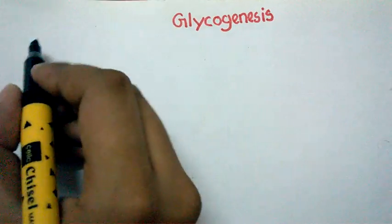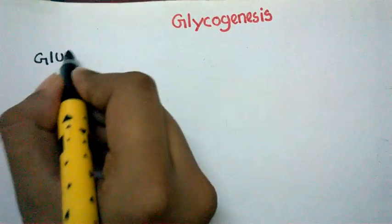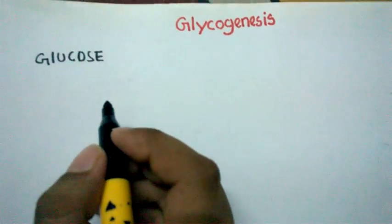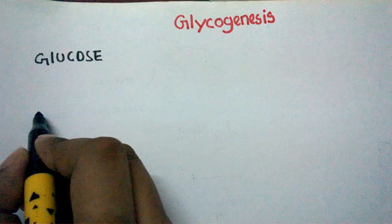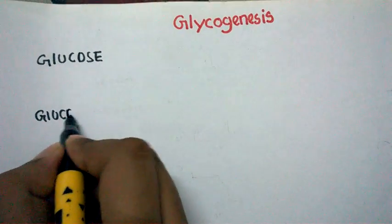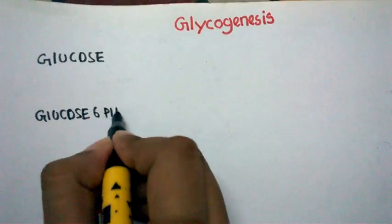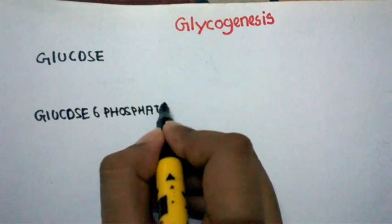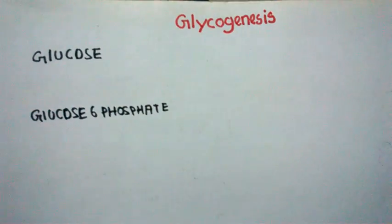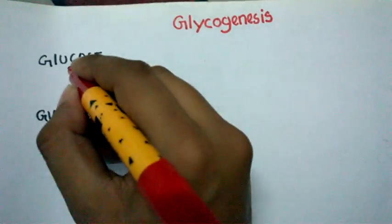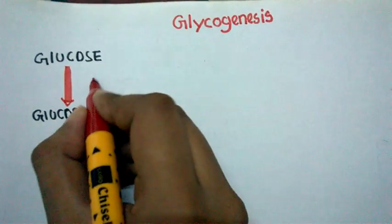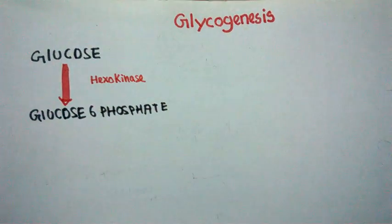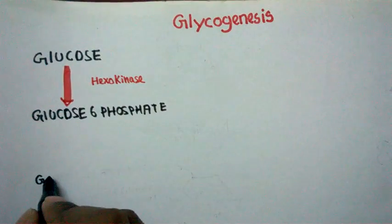So let's see step by step how the glycogenesis process occurs. Glucose is our substrate for glycogenesis. First, glucose would be converted to glucose-6-phosphate. This is a phosphorylation reaction and it is catalyzed by hexokinase, which is a very important enzyme in this pathway.